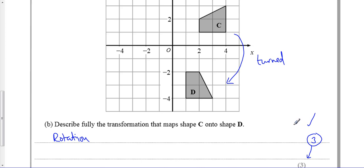Then you've got to tell me how many degrees. So it's either 90 degrees clockwise or 270 degrees anticlockwise. That will get you a second mark.